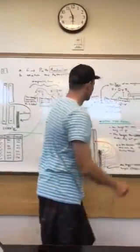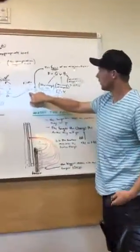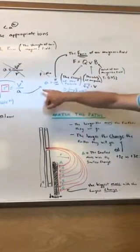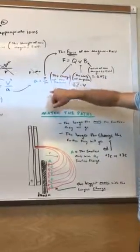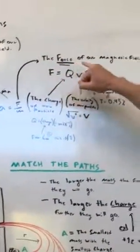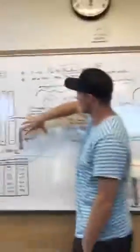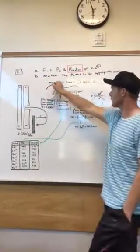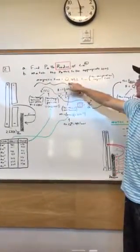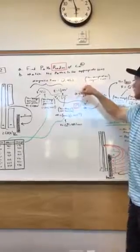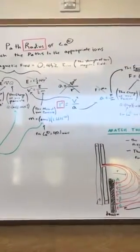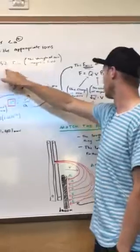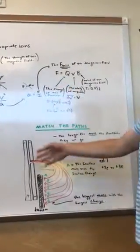Then we just have to find our acceleration. To get our acceleration, we use force equals mass times acceleration, so we rearrange that and our acceleration ends up being force over mass. To get our force, we use the force of our magnetic field. Our magnetic field is just right here, and the force of our magnetic field is 0.452 Teslas. Our equation for the force of our magnetic field is Q, which is the charge of our particle, which we find the same way — the charge for calcium.